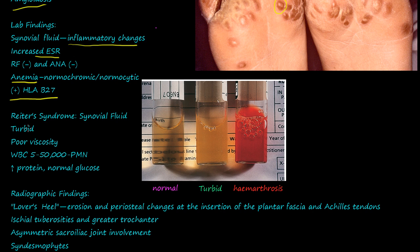Reiter's syndrome synovial fluid is turbid, meaning increased cell count — usually white blood cells. It has poor viscosity, so it's more watery rather than viscous like oil. The white blood cell count is 5,000 to 50,000 PMNs. There is increased protein due to destruction of the joint, and normal glucose.